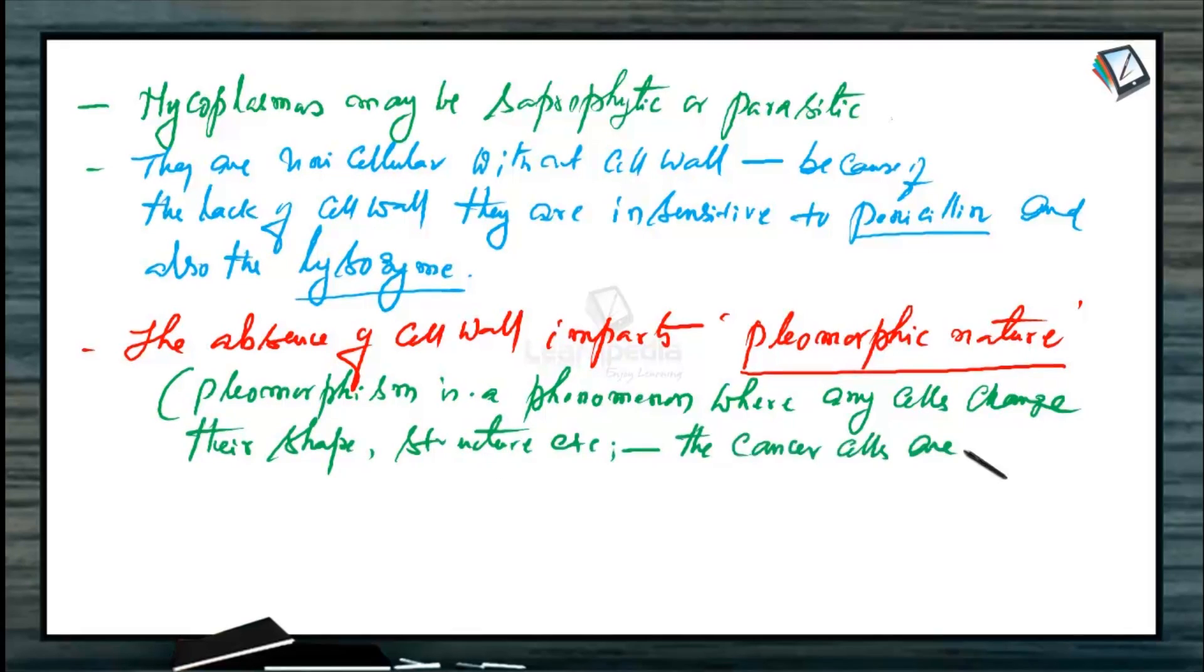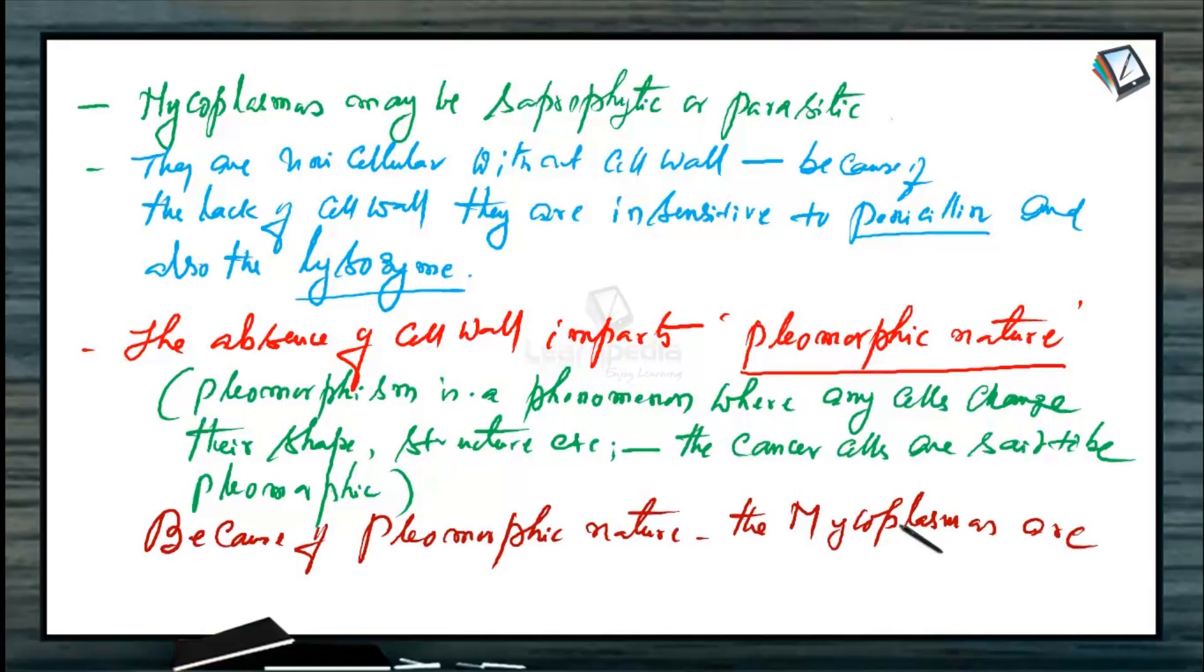The cancer cells are said to be pleomorphic. Because of pleomorphic nature, the mycoplasmas are regarded as jokers of plant kingdom.